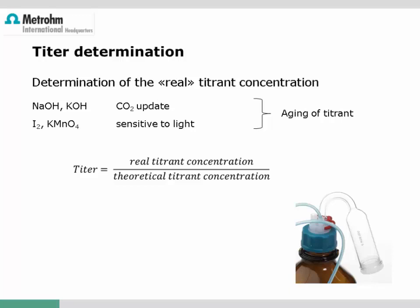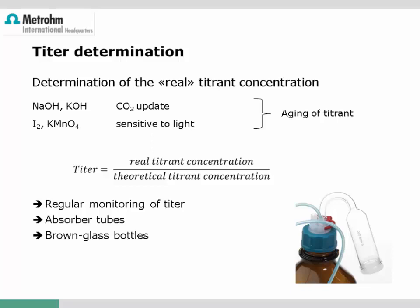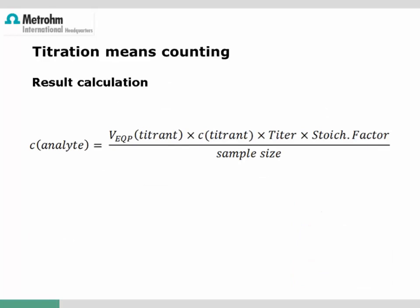The titer factor is calculated from the real determined concentration divided by the nominal concentration. We recommend monitoring the titer frequently, depending on the stability of the titrant. The aging of the titrant can be reduced by using countermeasures like absorber tubes, brown glass bottles for light-sensitive solutions, or storage at cool temperatures.